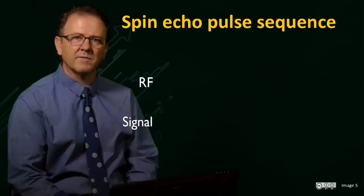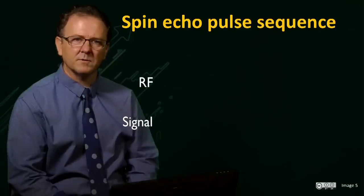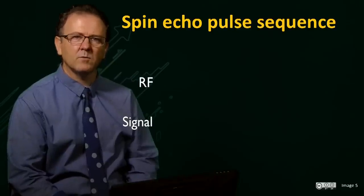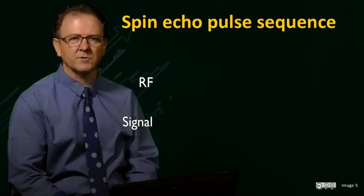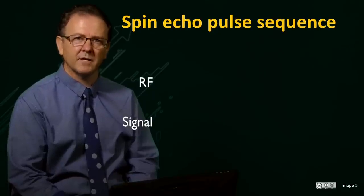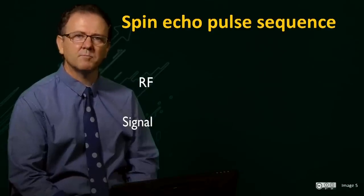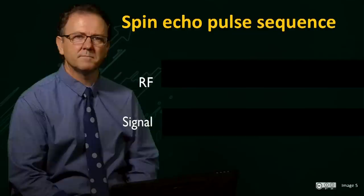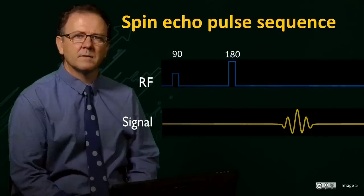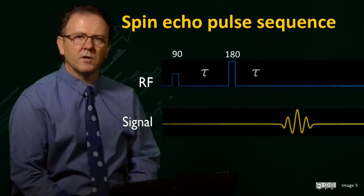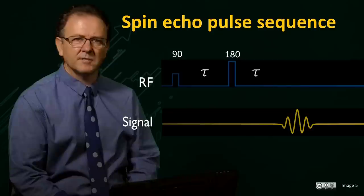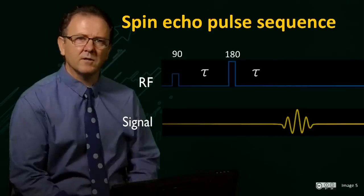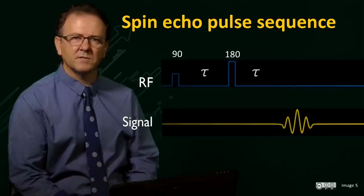So now we have the basis of an RF pulse sequence. The 90 tau 180 tau series of pulses and delays is called a spin echo sequence, and is the fundamental pulse sequence around which many MRI sequences are built. The top blue line represents the RF transmitter pulses, and the bottom yellow line the receiver and the signal that is detected.